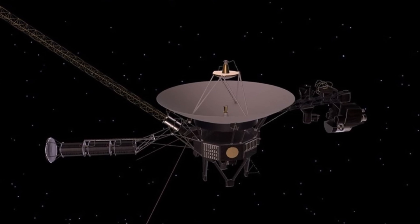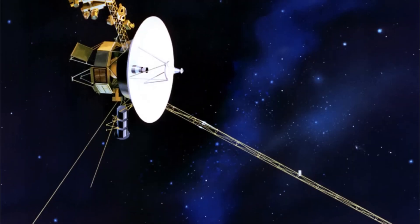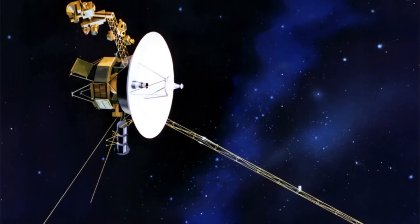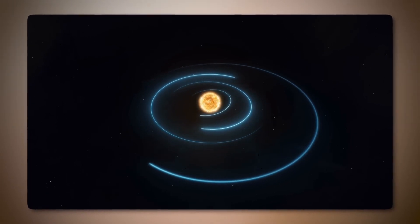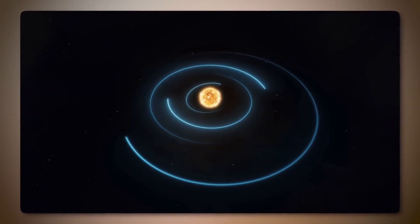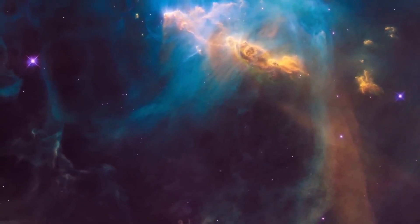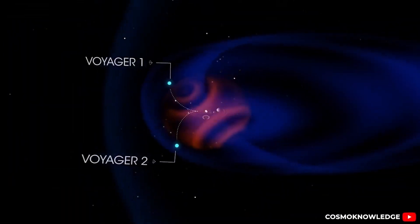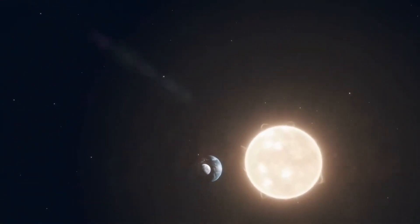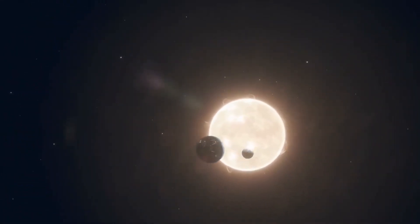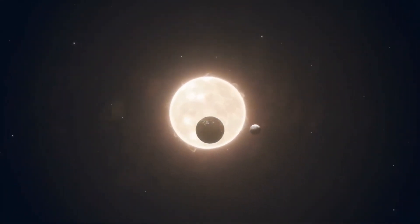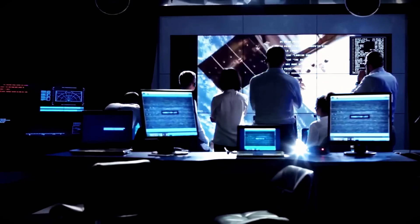The Voyager missions capitalized on a rare planetary alignment that occurs once every 176 years, allowing the spacecraft to perform gravitational slingshots from one planet to another, conserving their limited fuel. Despite launching second, Voyager 1 was the first to reach Jupiter and Saturn, while Voyager 2 explored Jupiter, Saturn, Uranus, and Neptune over a decade.